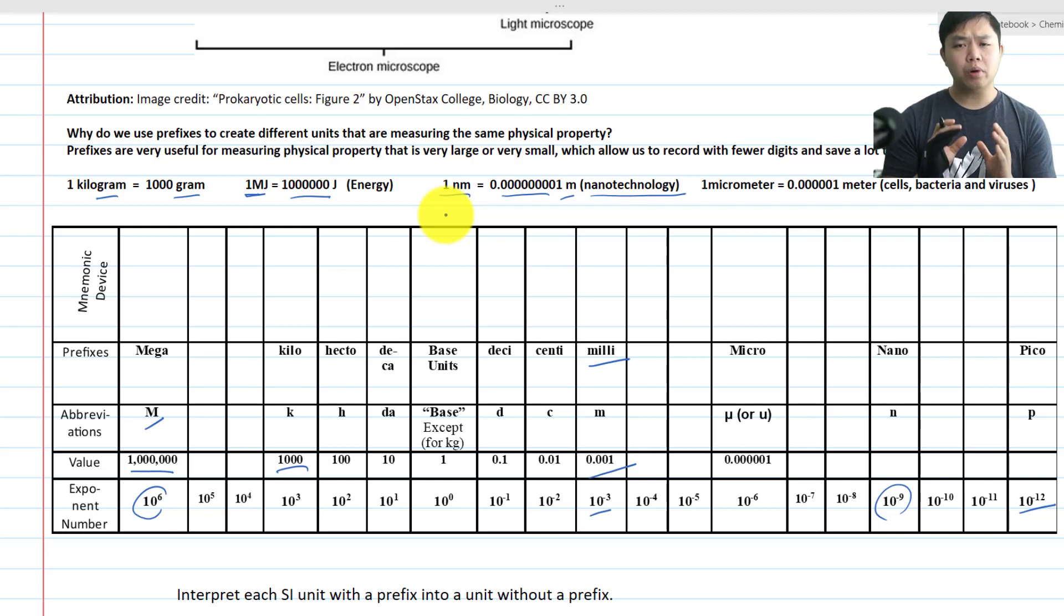So by having prefixes at different values, we can now change that unit into another unit that used to measure the same properties of matter. But making our data look a lot more organized, and a lot more simplified.